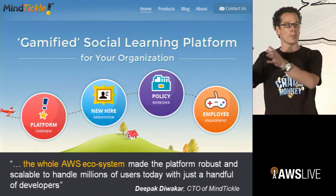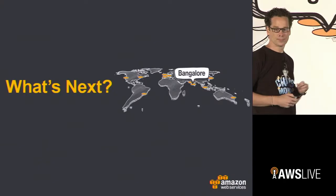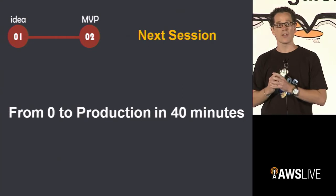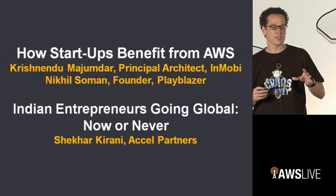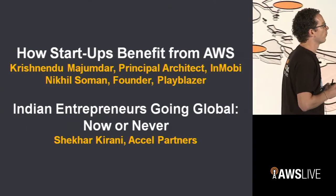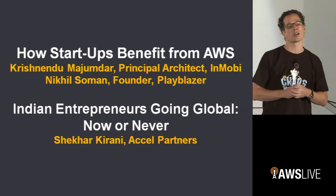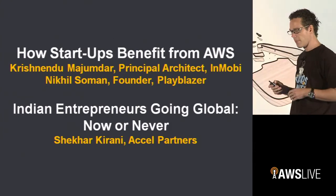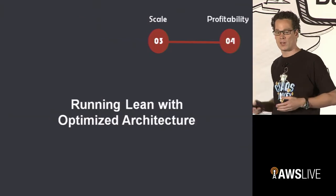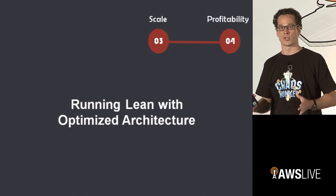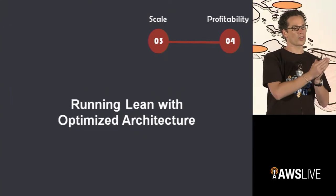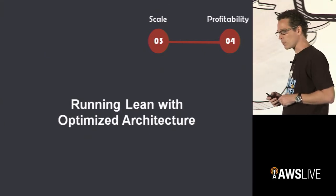The next session will zoom into how you get from idea to minimum viable product — we'll see some live demo on stage, from zero to production in 40 minutes. After that, a session on how startups benefit from AWS featuring the founder of Playblazer, the principal architect from Inmobi, and Shekhar Kirani from Excel. Then a session on scaling seamlessly and going global. We end with running lean with optimized architecture — what we call cost-aware architecting.